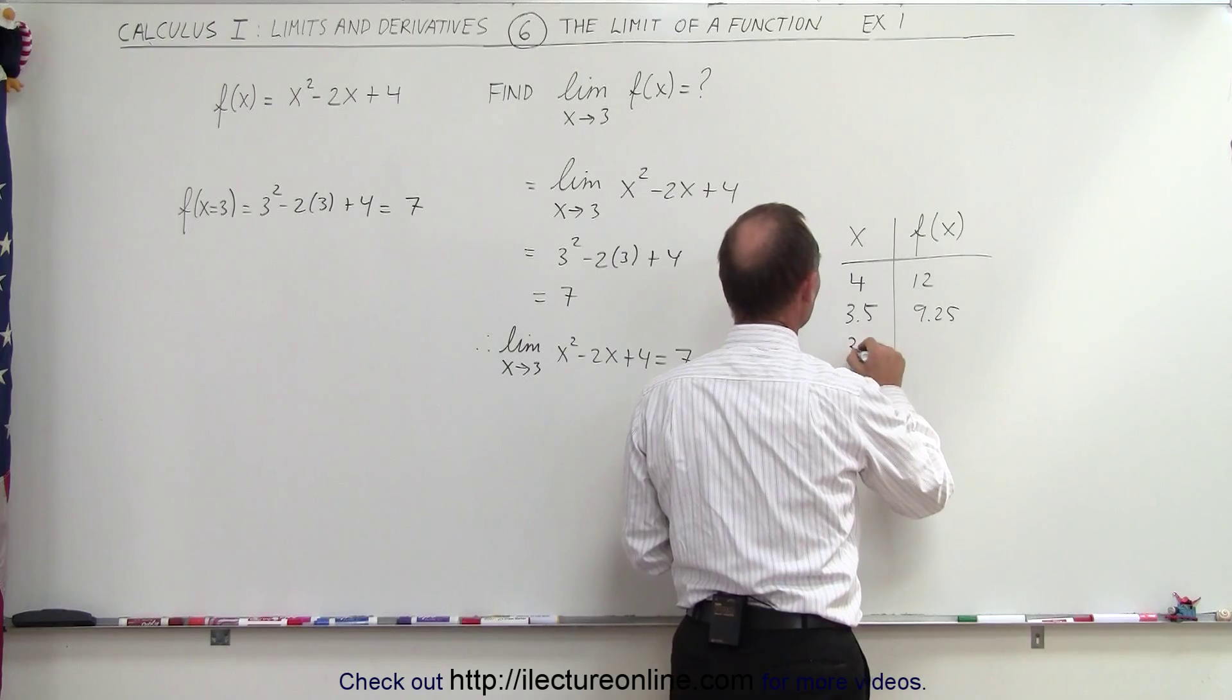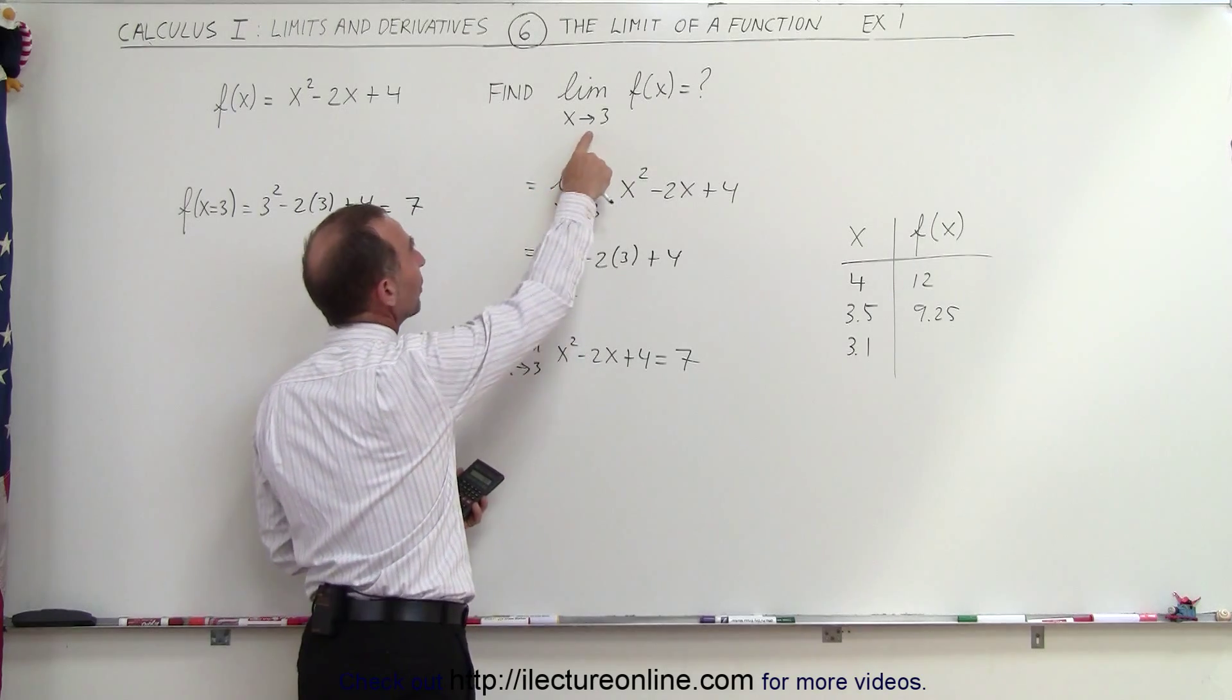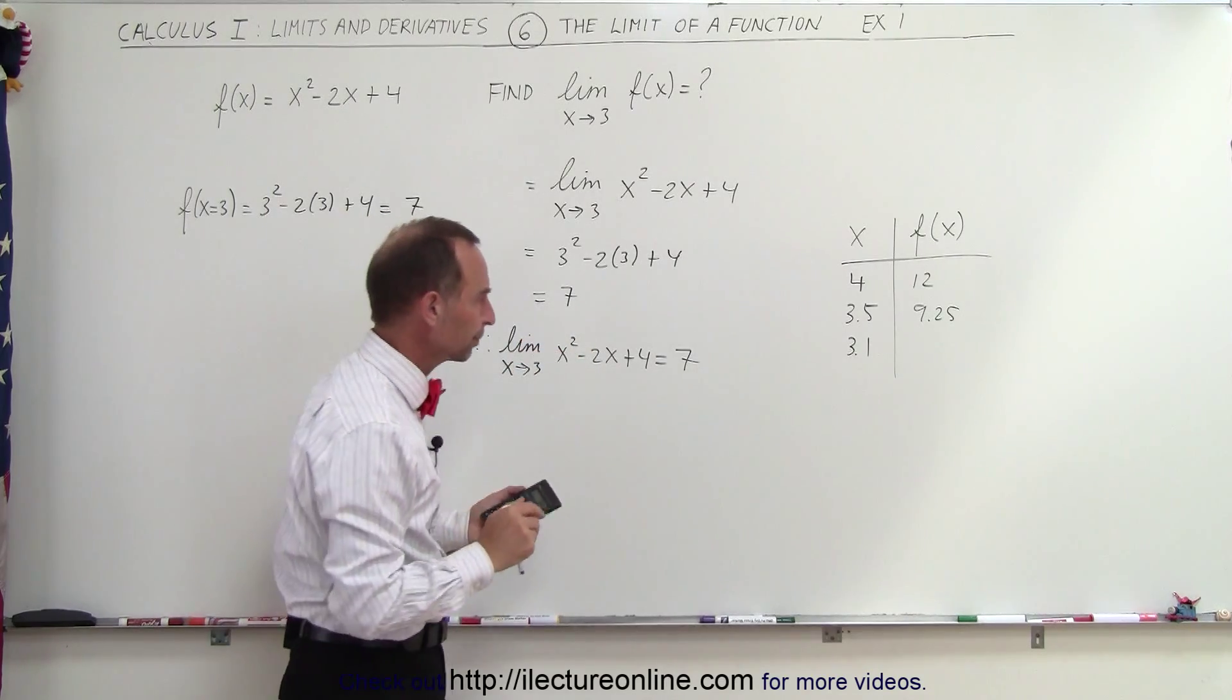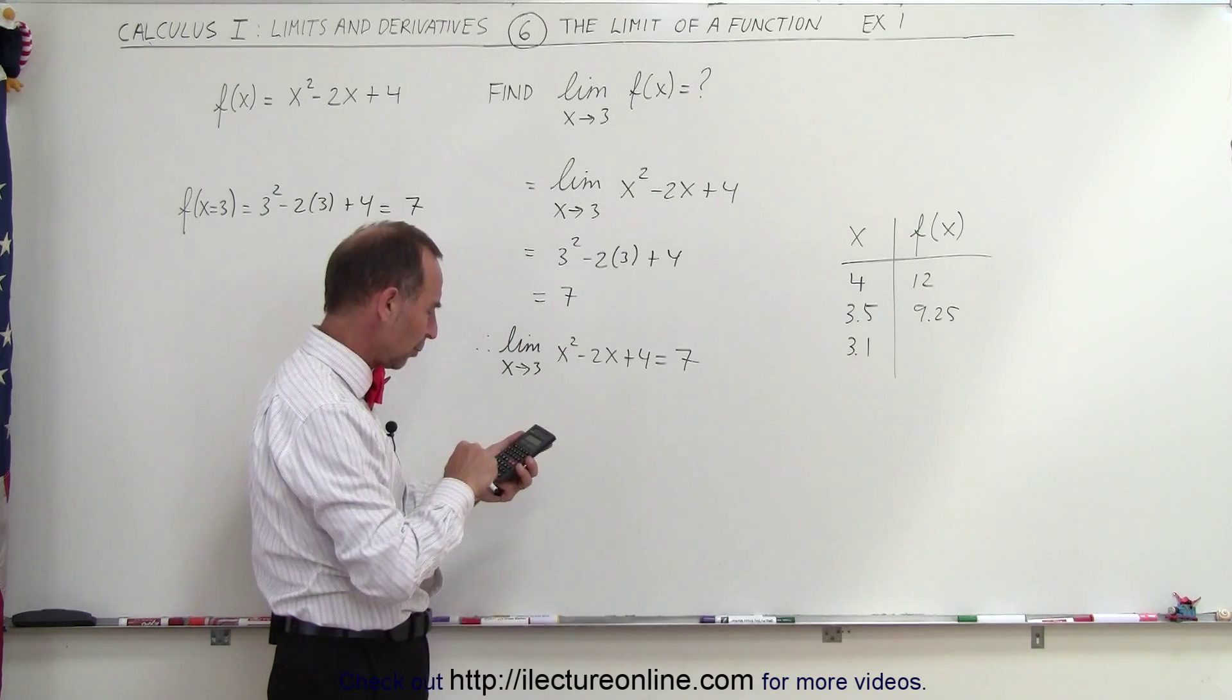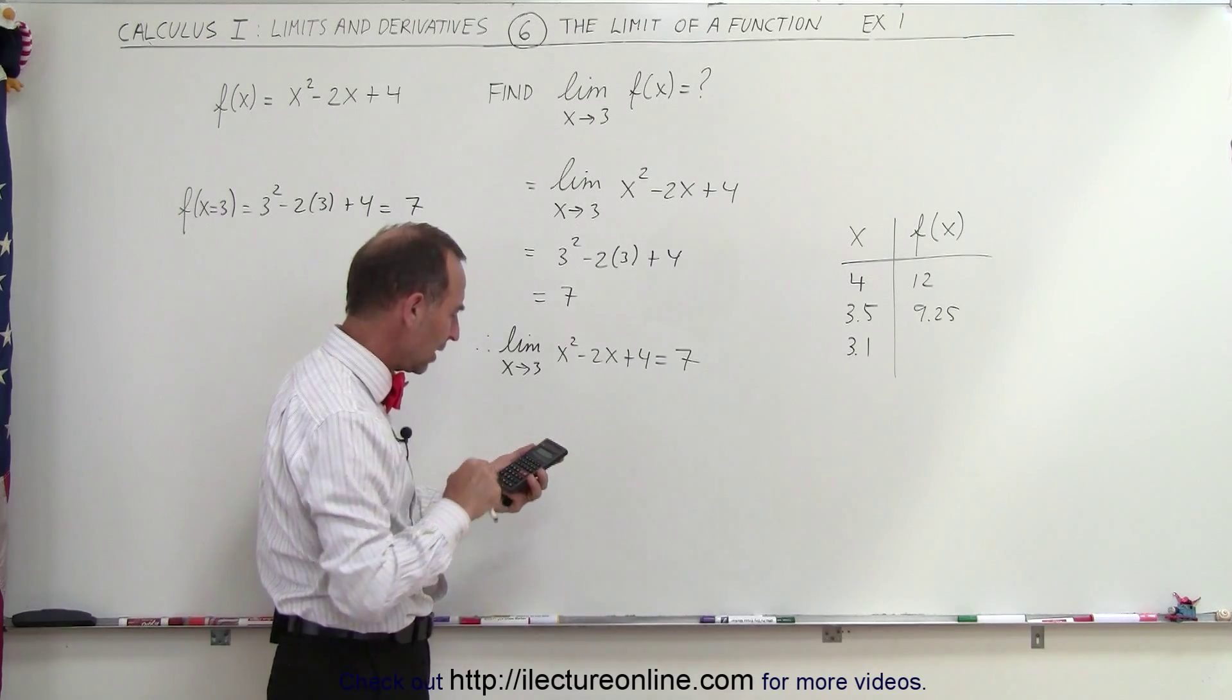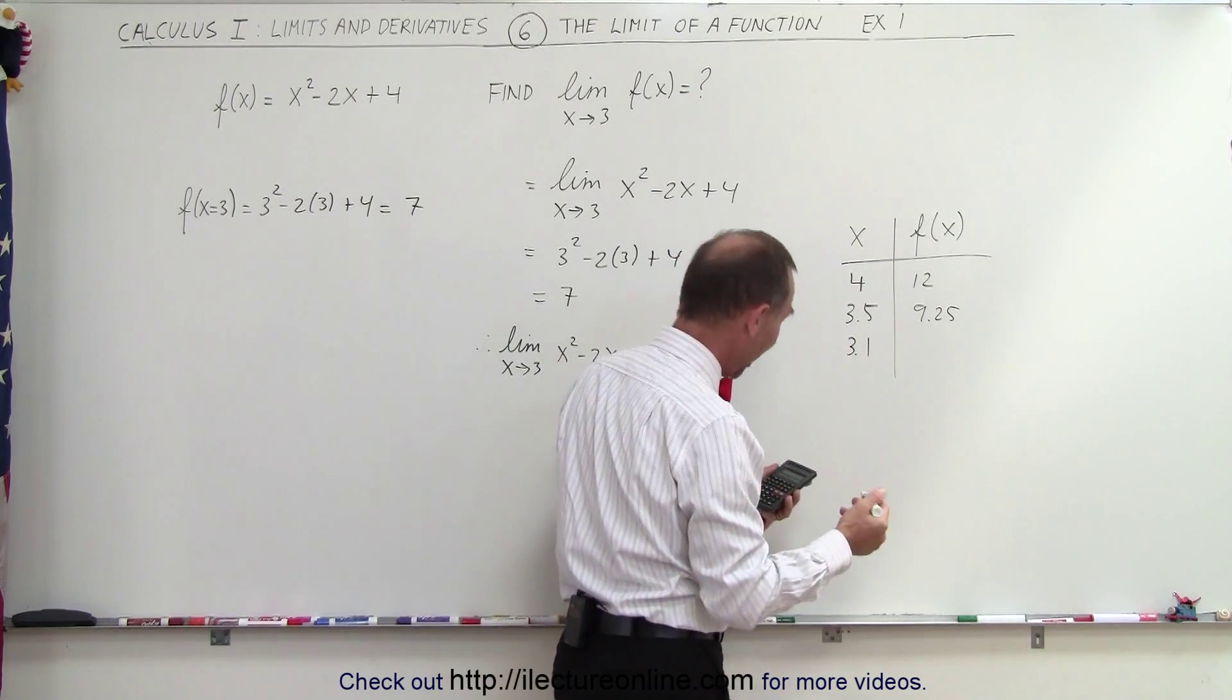Okay, what happens if x is equal to 3.1? Notice how I let x get closer and closer to the ultimate value of 3. I'm going to approach x equals 3 slowly but surely as I get closer to 3. What happens to the function? So when I plug in 3.1 in my function, I get 3.1² minus 6.2, 2 times 3.1, minus 4, oh, plus 4, haha, plus 4. I keep subtracting 4 but I'm supposed to add 4, which is equal to 7.41.